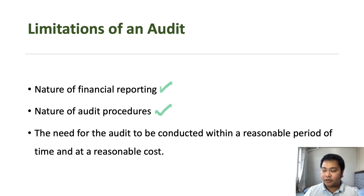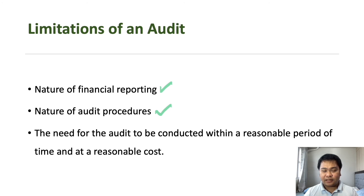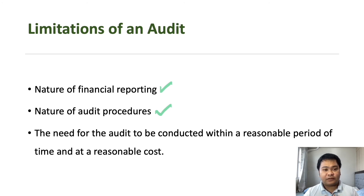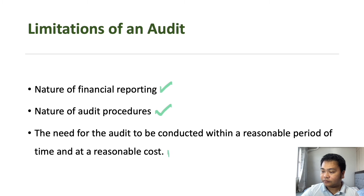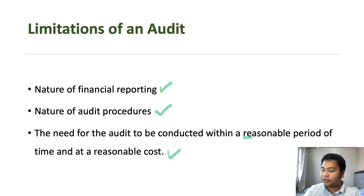Another limitation is the nature of audit procedures. In performing audit procedures, we use a lot of professional judgment. Auditing is not an exact science, so lapses in judgment on the part of the auditor could result in incorrect decision making and therefore incorrect reporting.